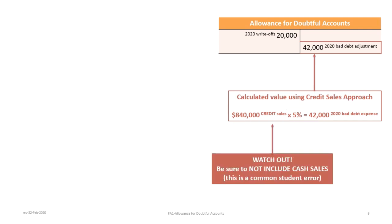A common mistake is for students to use total sales including cash — that is definitely not what you want. Cash sales are 100% collected, so there is only the potential of default on credit sales. Do not include cash sales; only include credit sales.